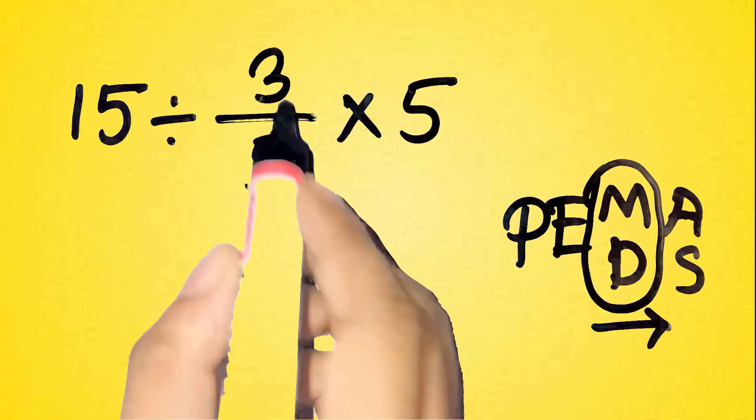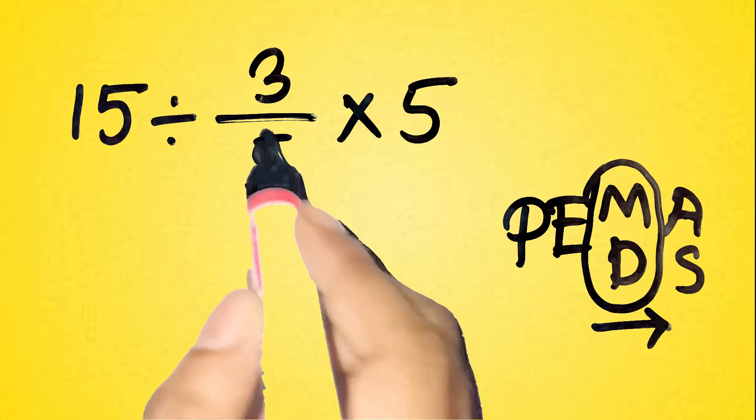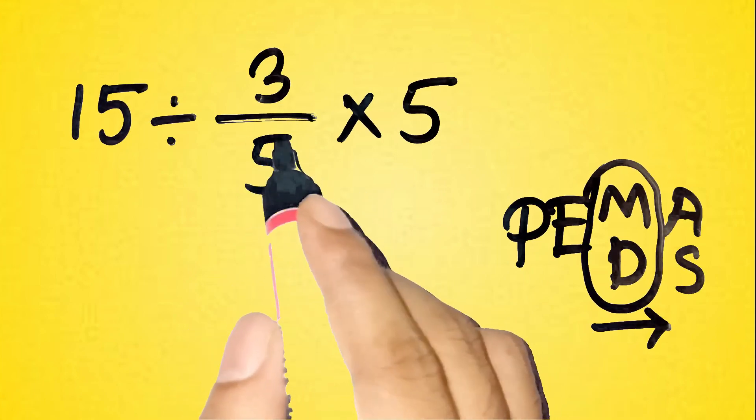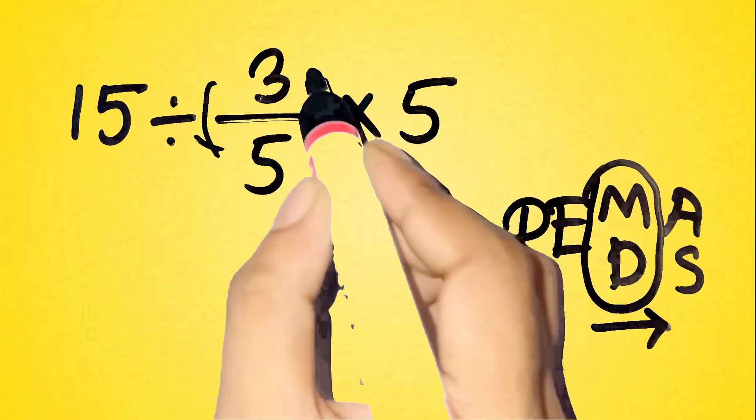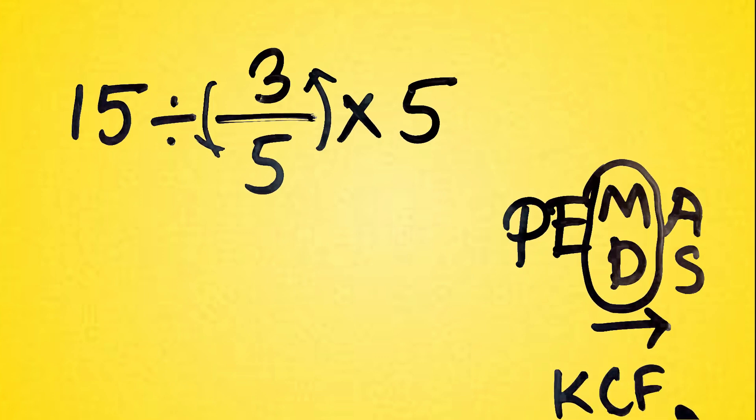Now, whenever we see a fraction and division, like divided by 3 over 5, it's often easier to flip it using the KCF rule. That's keep, change, flip.